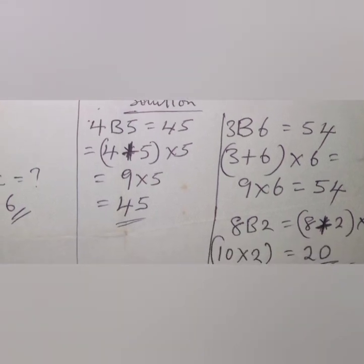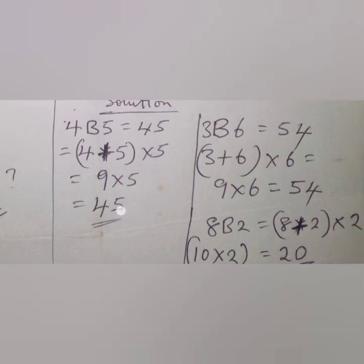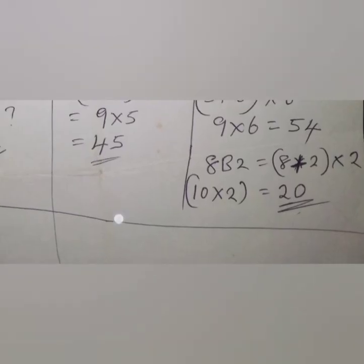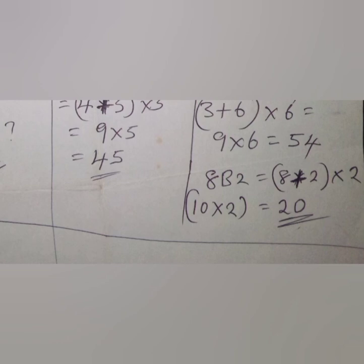Whenever you're doing this kind of question, look at it critically, think fast, and answer accordingly. Remember: 4b5 = 45 because you add the two outer numbers then multiply by the last. 3b6 = 54 by the same method. 8b2: add the two numbers (8 + 2 = 10), multiply by the last number (10 × 2 = 20). That is exactly how to solve that kind of question.